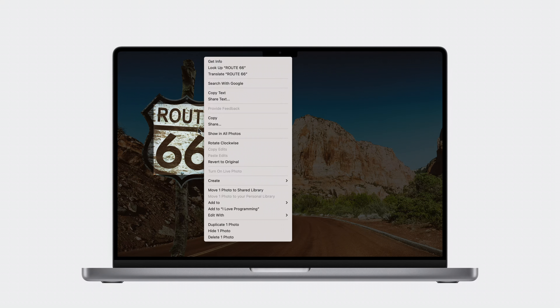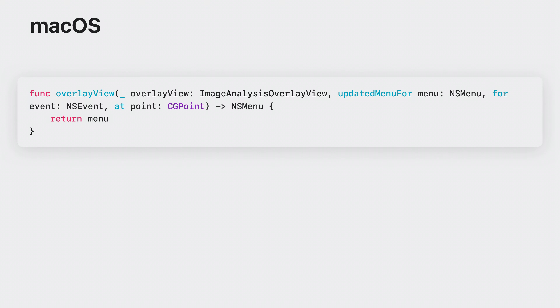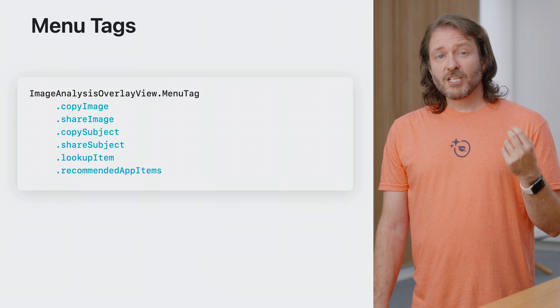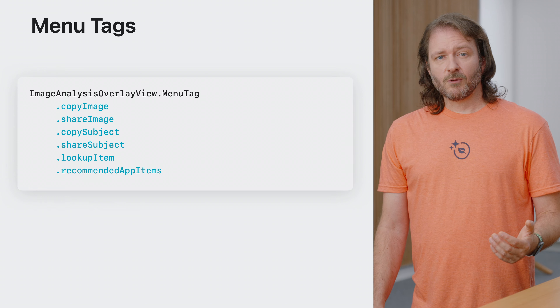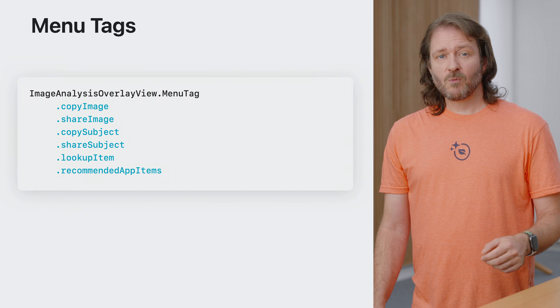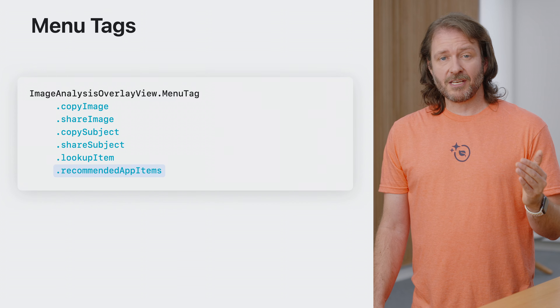You now have a new delegate method available: overlay view updated menu for event at point. The arguments include the event that triggered the menu and the point in the overlay view bounds coordinate space, so you can create any menus you need. From there, you simply need to return the menu that you would like to display. The default implementation returns the VisionKit menu. However, you may wish to add your own items to that menu or take items from that menu and add them to yours. VisionKit menu items are identified by tags and there is a struct available that contains these tags. We have several items available for copying and sharing the image and subjects and one for lookup, as well as a special item you can use to find the suggested index to add items to the VisionKit provided menu.